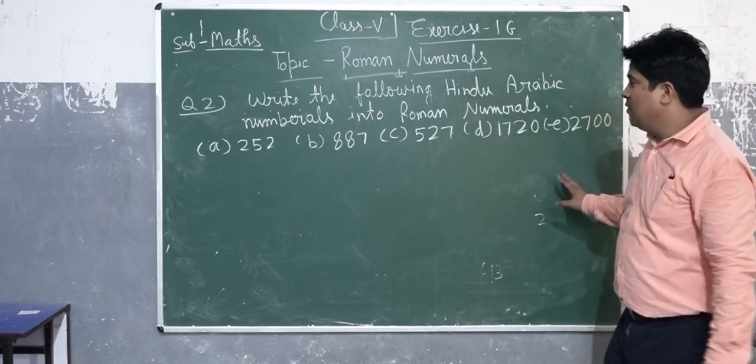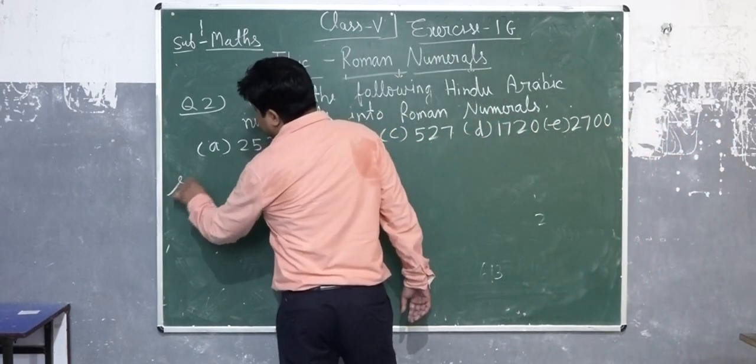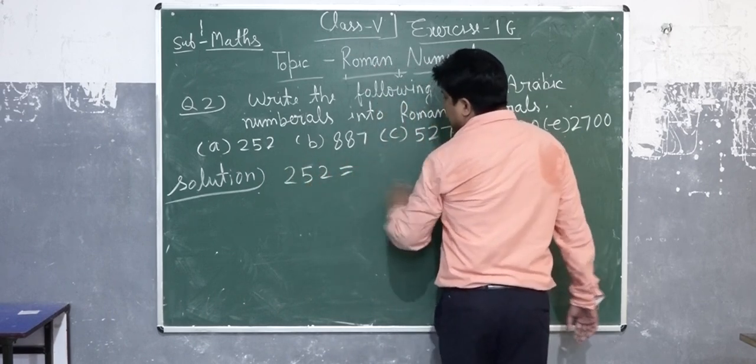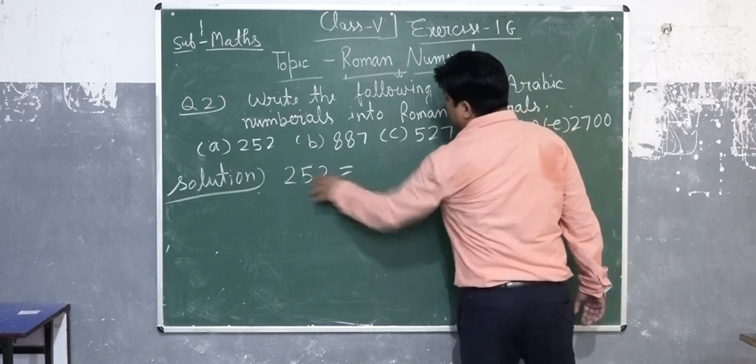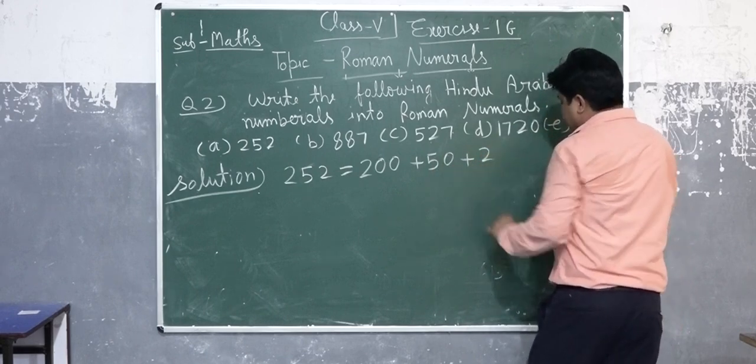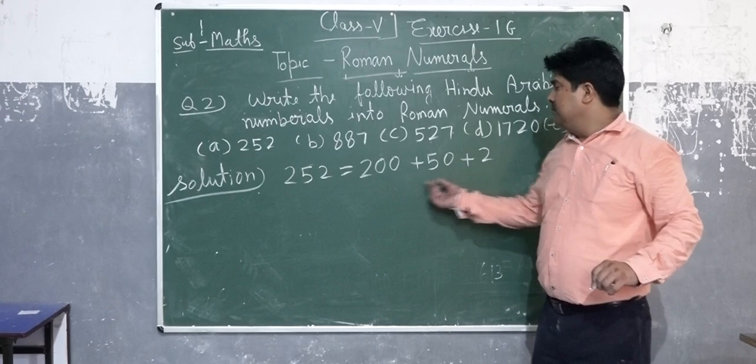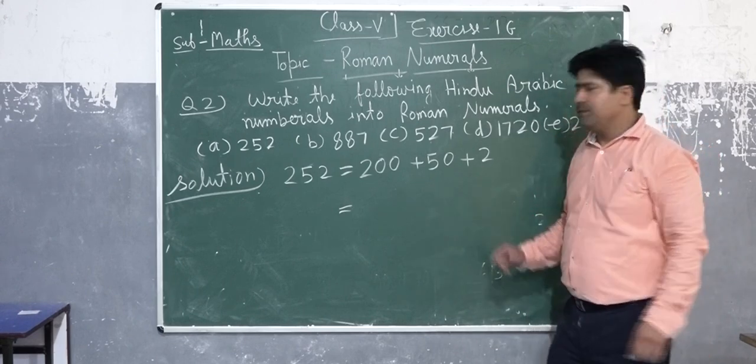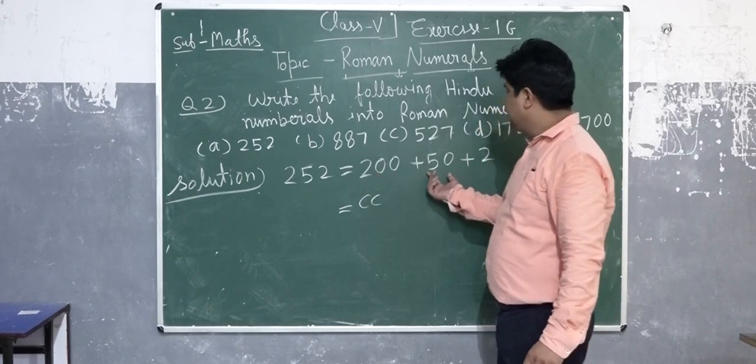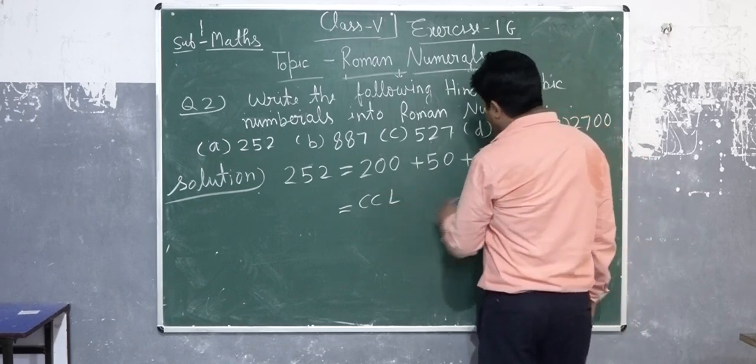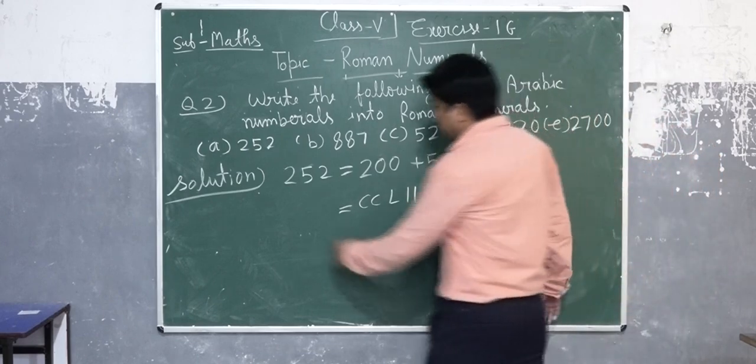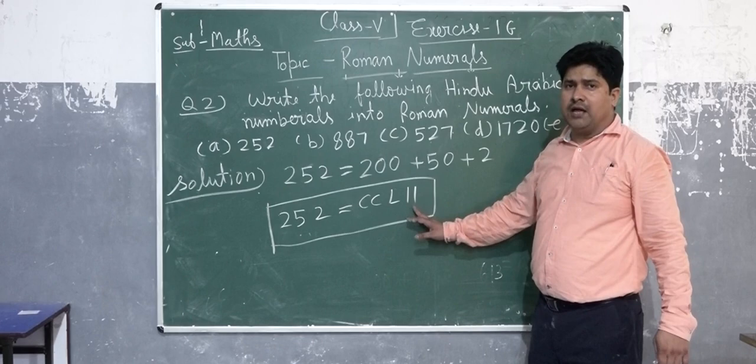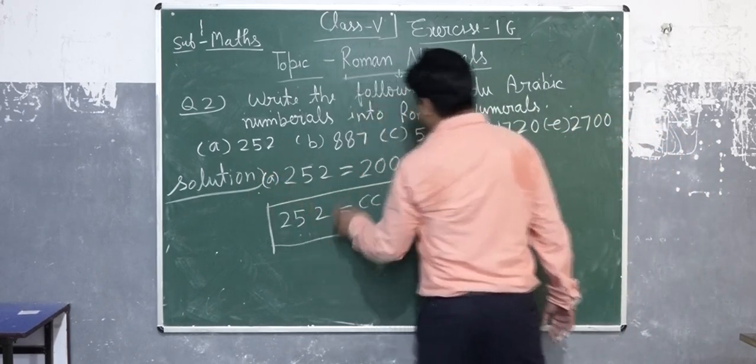Now, if you want to convert into Hindu-Arabic number, into Roman numerals, first of all we will expand this number 252. We will expand it into 200 plus 50 plus 2. And now we will write each component of these numbers in Roman numerals. If you want to write 200, we will use C. We will repeat C two times, it becomes 200. Then value of 50 is L, and value of 2 is II. So if you want to write 252 into Roman numerals, it will be written like that: CCLII.